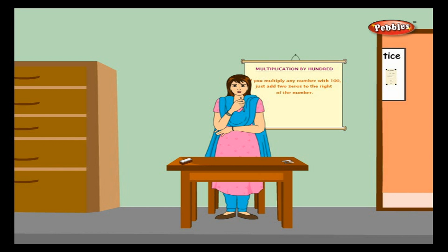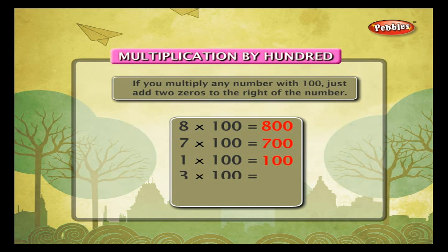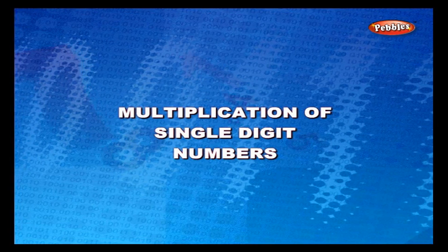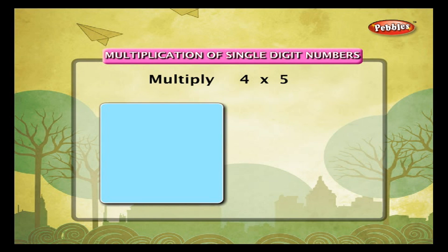Multiplication by 100: if you multiply any number by 100, just add two zeros to the right of the number. For example, 8 into 100 is 800, 7 into 100 is 700, 1 into 100 is 100, 3 into 100 is 300, 5 into 100 is 500, and so on.